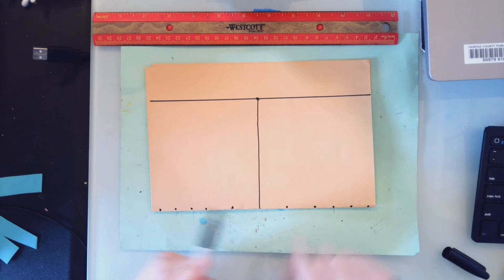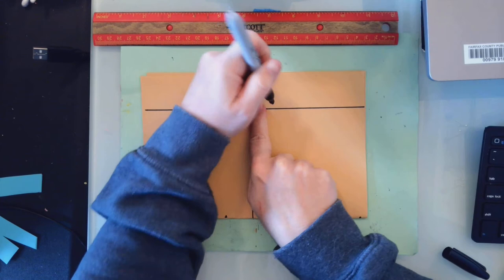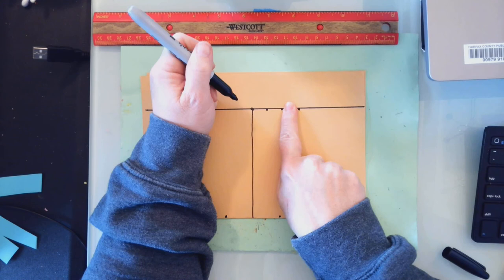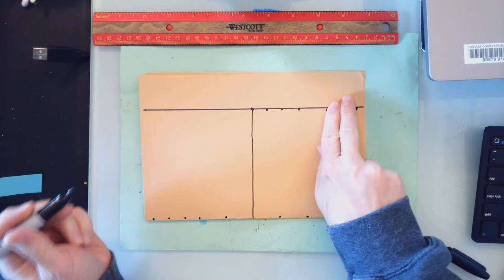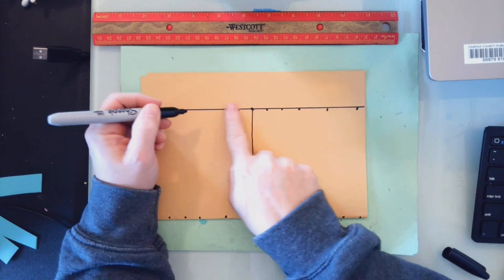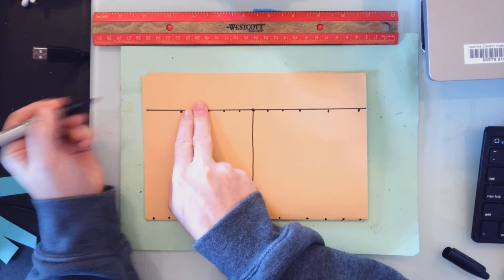Now up here, instead of starting with two fingers at the midpoint I'm going to start with one finger: one finger, one finger, one finger, and then two fingers, and two fingers. Same thing on the opposite side: one finger, one finger, one finger, two fingers, two fingers.